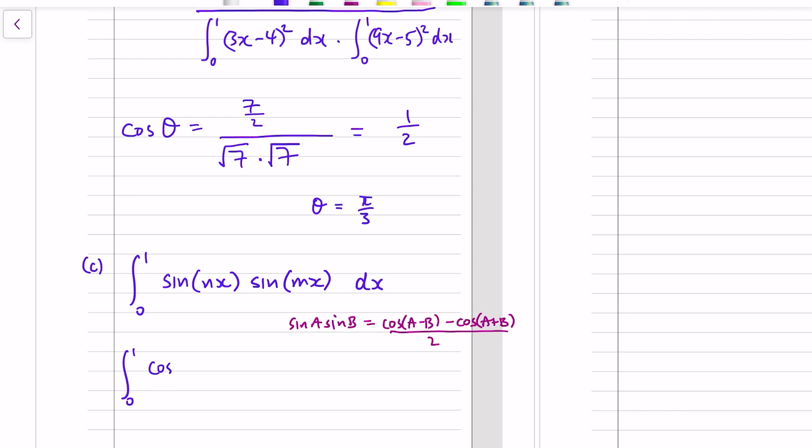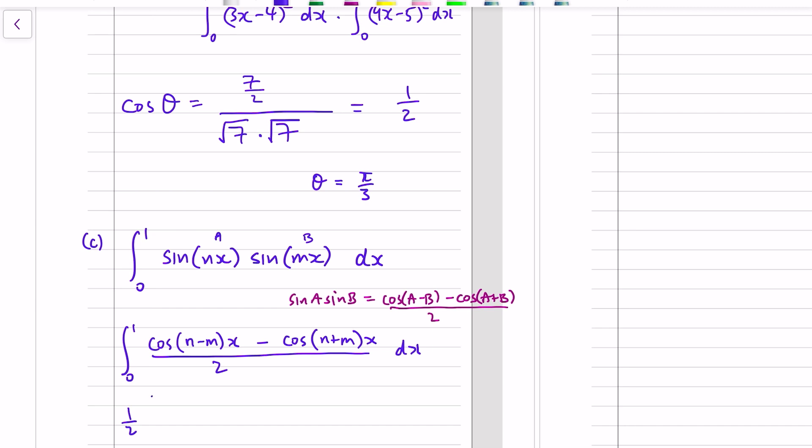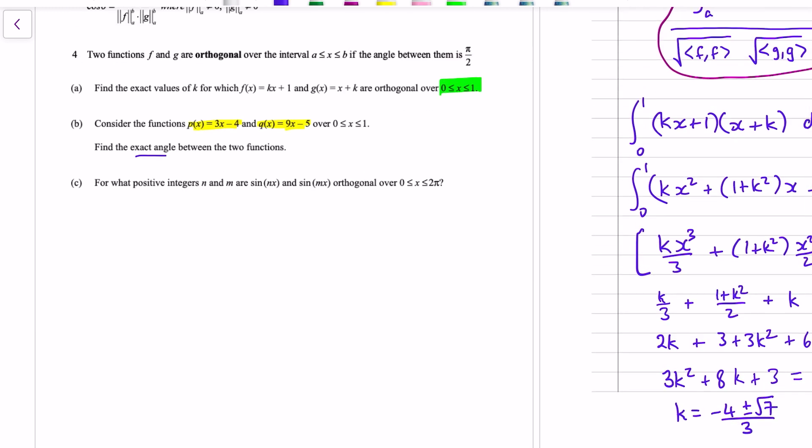We've got a formula that says 2 sine a sine b is equal to cos a minus b minus cos a plus b. So turning this product into a difference of two cosines, we've got a 2 there which we didn't have, so we're going to have to half all of this. We've got cos of nx minus mx because a is nx and b is mx. nx minus mx are like terms. If n and m are constants, then we've got n minus m times x, take away n plus m all x all over 2.